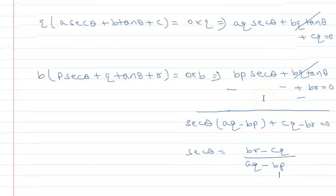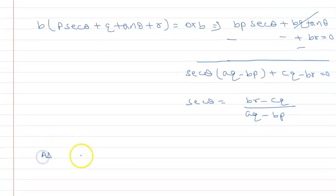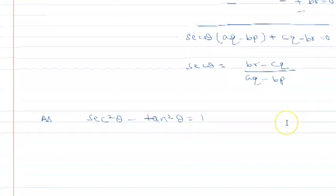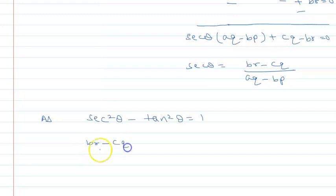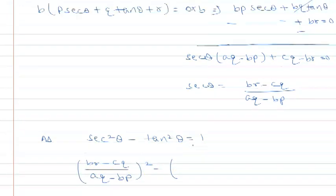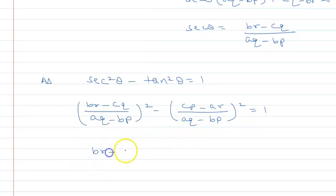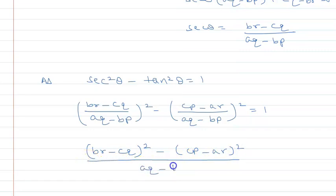Now using the identity sec²θ − tan²θ = 1, substituting: [(br − cq) / (aq − bp)]² − [(cp − ar) / (aq − bp)]² = 1, which gives (br − cq)² − (cp − ar)² all over (aq − bp)² = 1.